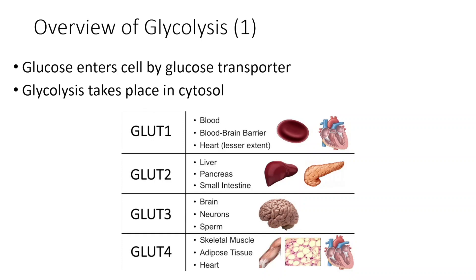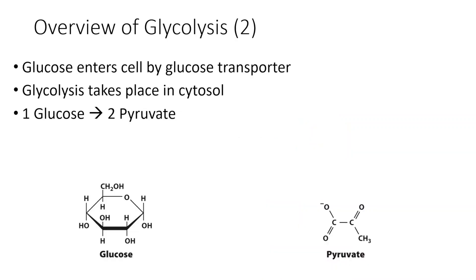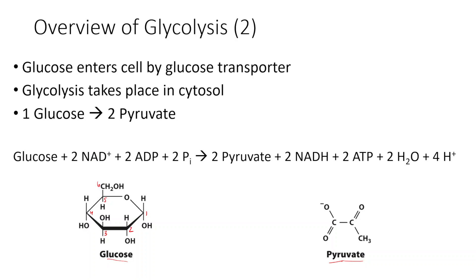Once glucose enters the cell through the glucose transporter, glycolysis takes place in the cytosol — glucose doesn't need to enter any other organelles. What is happening during glycolysis? We start out with a molecule of glucose and turn it into two molecules of pyruvate. Glucose has six carbons, but pyruvate only has three, so part of what's happening during glycolysis is we're cutting a glucose molecule in half. There are 10 steps in glycolysis.